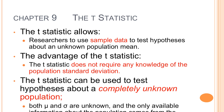The t-statistic allows you to use sample data instead of population data, because most of the time we don't have population data, and test hypotheses about an unknown population mean. The advantage is you don't need any knowledge of the population standard deviation. The t-statistic can be used to test hypotheses about a completely unknown population — both mu and sigma are unknown, and the only available information about the population is from the sample.